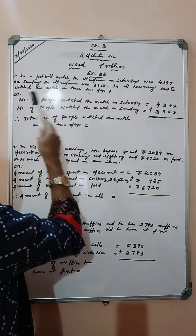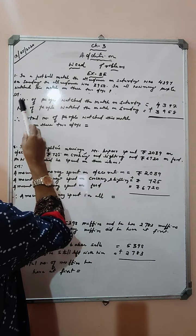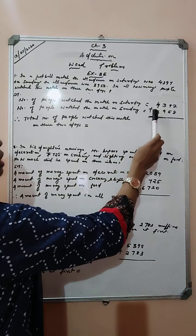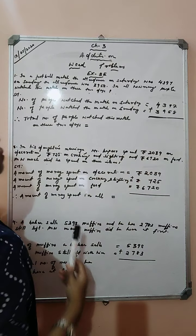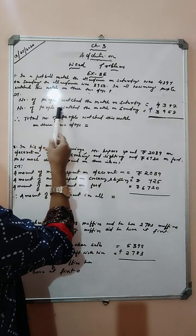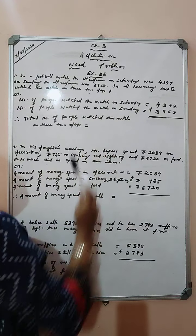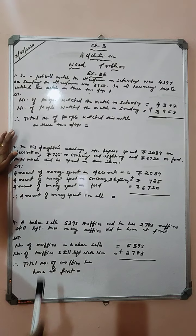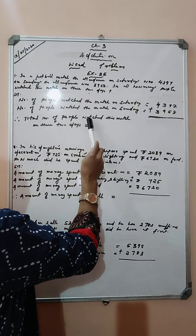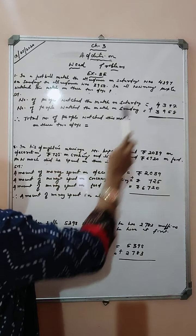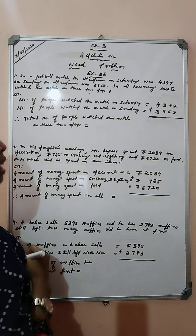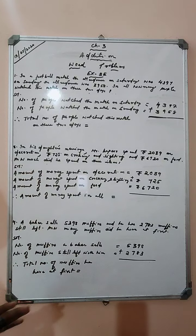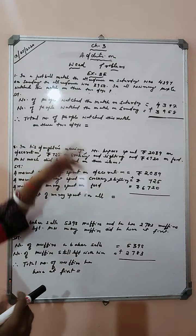We can write the statement as: number of people who watched the match on Saturday is 4,397. Number of people who watched the match on Sunday is 3,958. Therefore, total number of people who watched this match on these two days — let us add to find out the total.